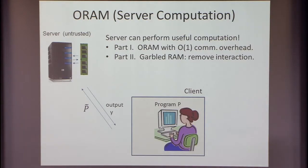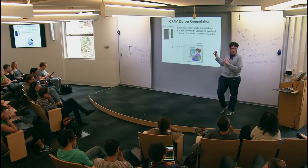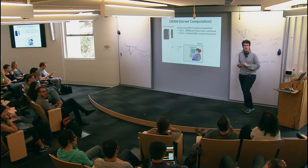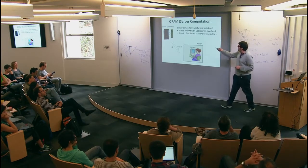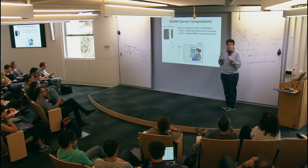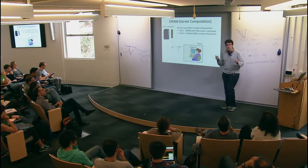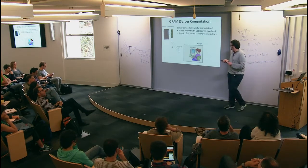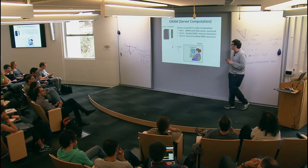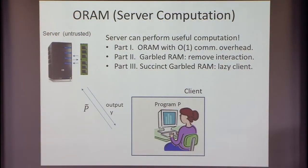In this case I'm going to change the problem a little and let the server actually compute the output himself. If you want to hide it, you can always encrypt it, so this is strictly better. These two parts are a little bit incomparable. In the first part, I'm going to reduce communication complexity. In the second part, the communication complexity may be worse — it's still polylogarithmic — but we're getting rid of round complexity. In the third part, I'll talk about succinct garbled RAM briefly. It's essentially the same model as the second part, but everything will be incredibly succinct.